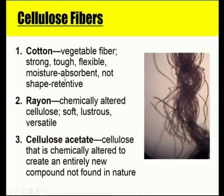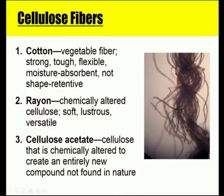Cellulose fibers can be obtained from starting materials such as cotton, rayon, and cellulose acetate. Cotton is a vegetable fiber which is strong, tough, flexible, and moisture absorbent, though not shape-retentive. Rayon is a naturally derived but chemically altered cellulose fiber that is very soft, luscious, and versatile, though it has lower strength than cotton.